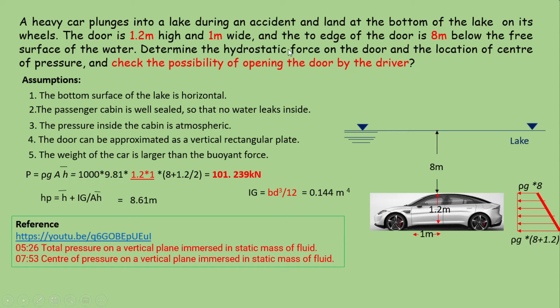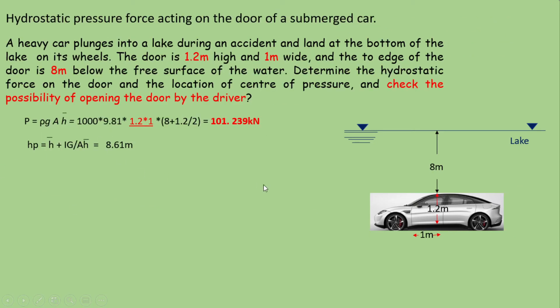The first part of the problem, determination of hydrostatic force on the door and the location of the center of pressure, is already calculated. The next part is to check the possibility of opening the door by the driver. If the driver is a strong person he can lift a load of 100 kg or approximately 1000 newtons equal to 1 kilonewton. He can exert a force at a point farthest from the hinge for maximum effect and can generate a moment of 1 kilonewton into 1 meter.